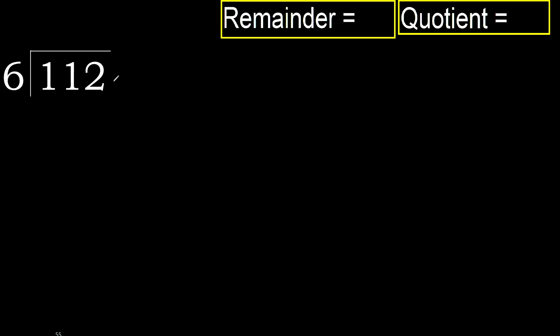112 divided by 6. 1 is less, therefore next. 11 is not less, therefore with 11. 6 multiplied by which number is nearest to 11, but not greater.